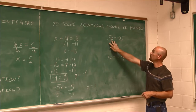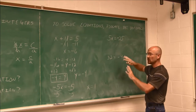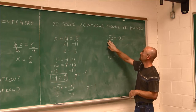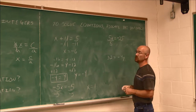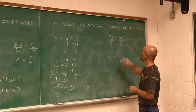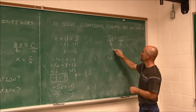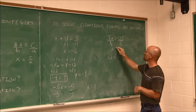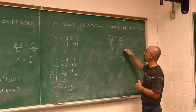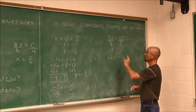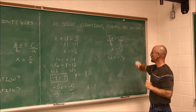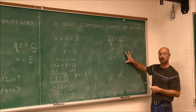Here we have 5x equals negative 25 — similar to the last one but a little different. The coefficient is a positive 5. I can undo that using division, since this says 5 times x. Let's divide both sides by 5. I get 5 over 5, which leaves just x. Here I have a negative divided by a positive — only one negative, so the answer will be negative. 25 divided by 5 is 5, so x equals negative 5. Let's check: 5 times negative 5 equals negative 25? It sure does.